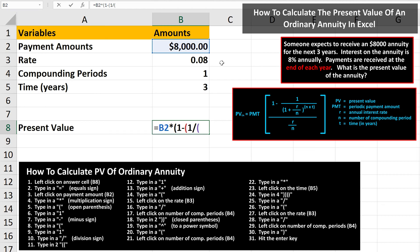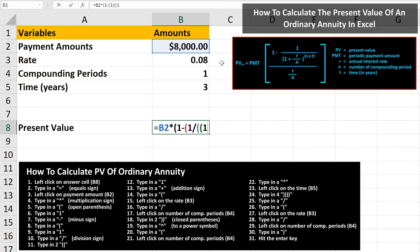From here, we type in two open parenthesis. Then we type in another 1. Next, we type in an addition sign, followed by another open parenthesis. Now we need to left click on the rate, cell B3. Then type in another division sign. From here, we need to left click on the number of compounding periods, cell B4.